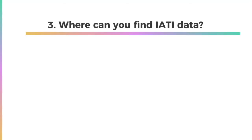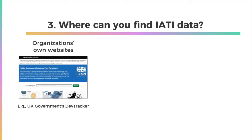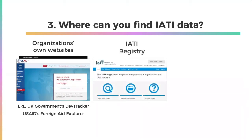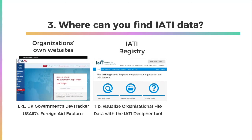Where can you find IATI data? Many organizations publish their organizational and activity datasets in IATI's format on their own websites. For example, the UK government's DevTracker website shows detailed information on all development and humanitarian projects funded by the UK government published to the IATI standard. Another example is the USAID Foreign Aid Explorer — this online tool includes all organizations' activity data reported to the IATI standard and provides visualizations of the entire development cooperation landscape through a country lens. Organizations link their data to the IATI registry, which acts as an online catalog and index of all data published to the IATI standard. We recommend you download and install the IATI Decipher tool to visualize organizational file data within the IATI registry.